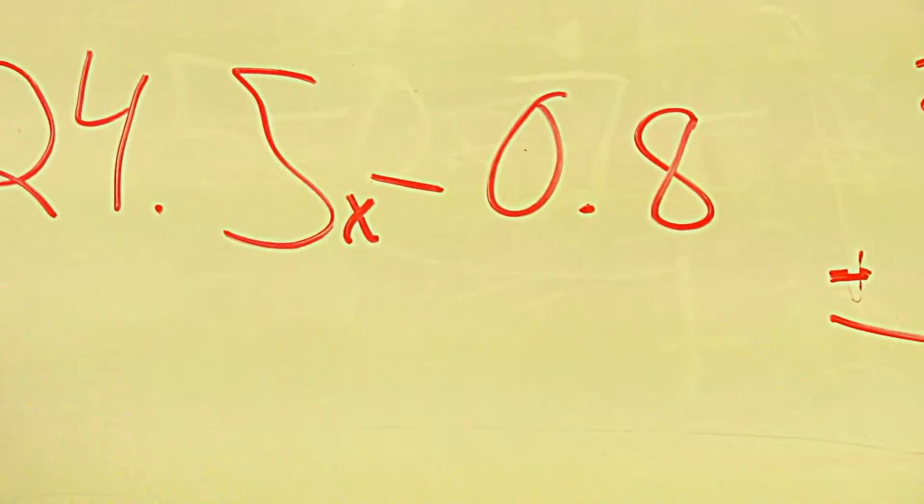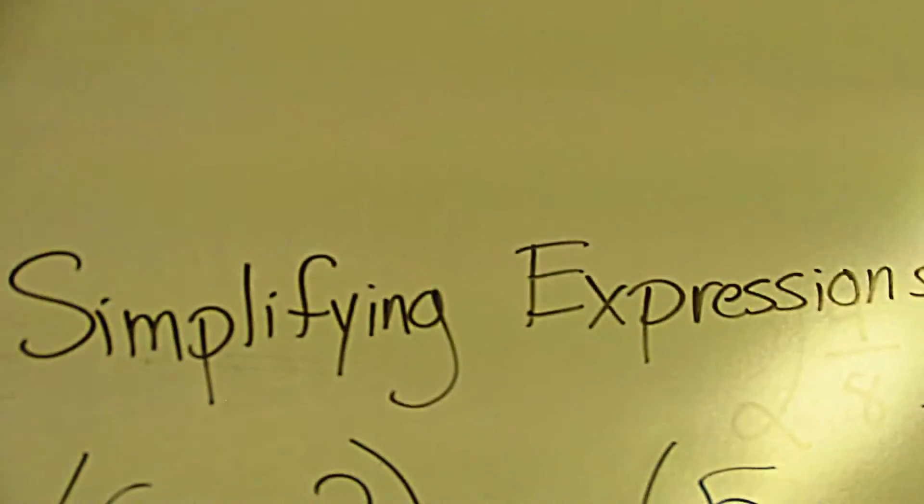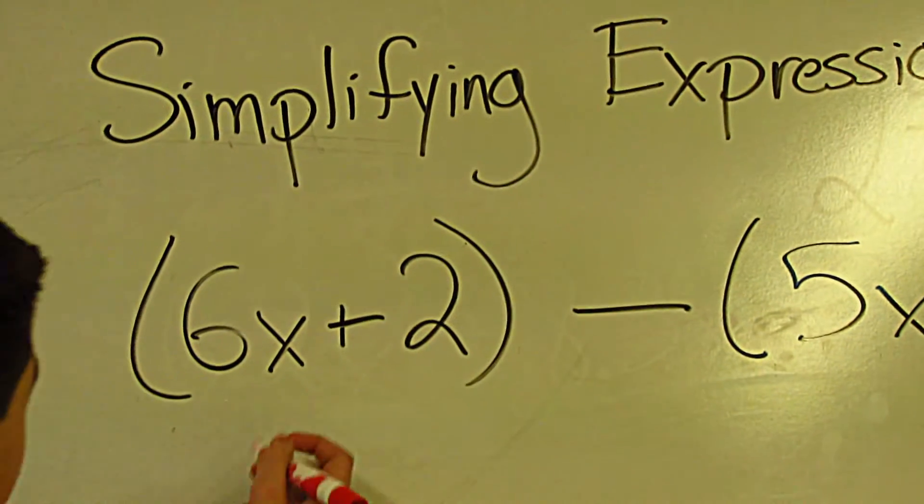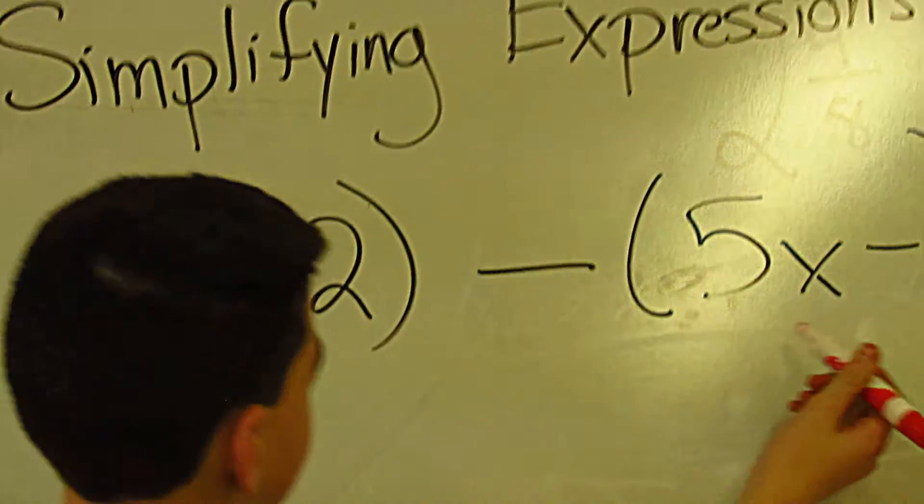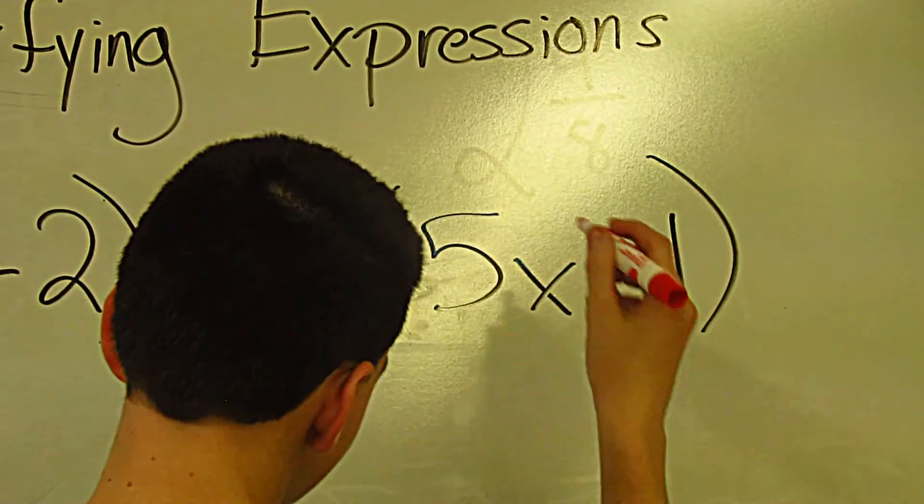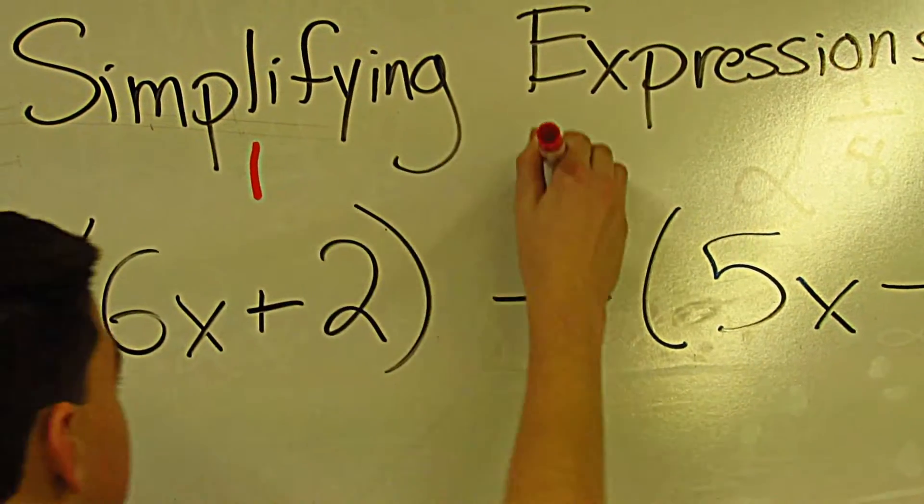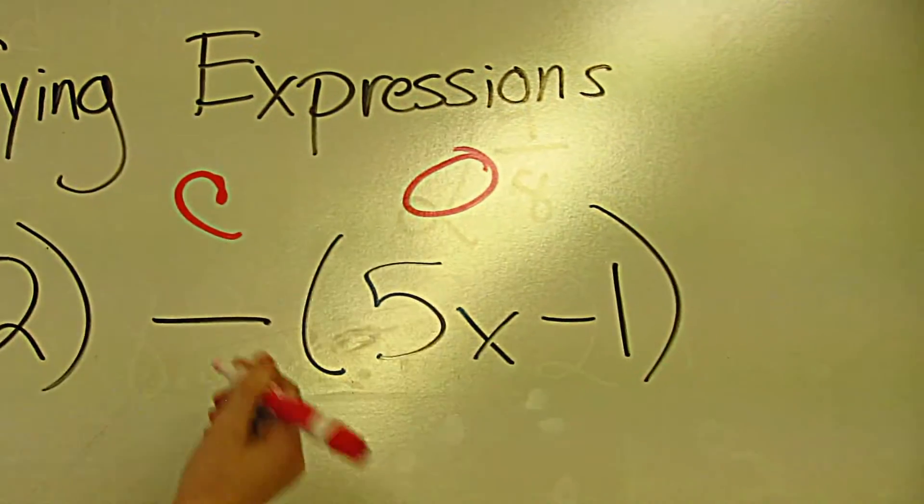The next problem we're going to be doing is 6x plus 2 minus 5x minus 1. So we have to do LCO because it's negative.